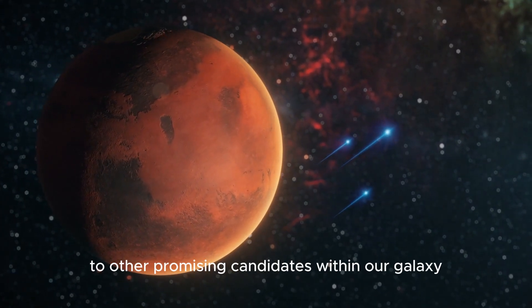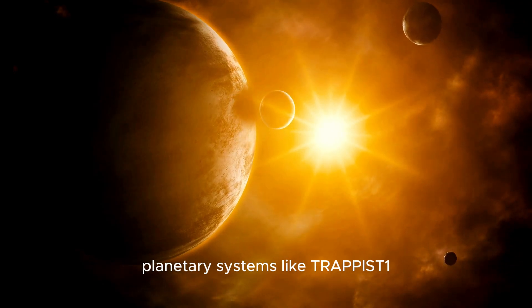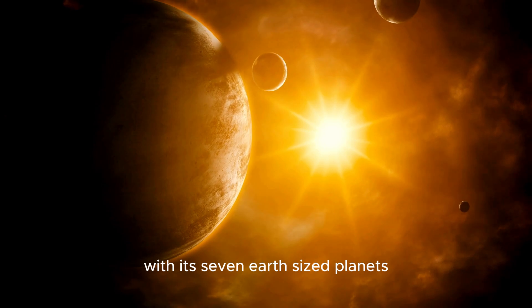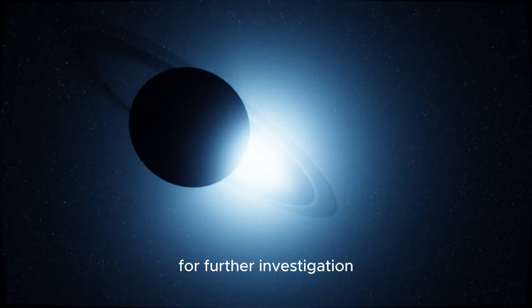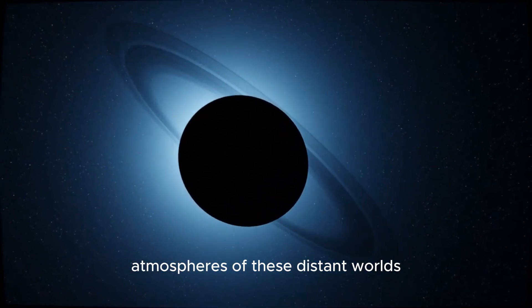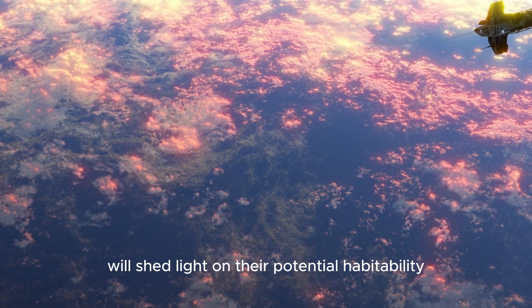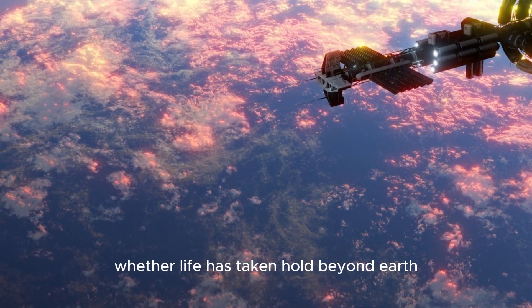The search for habitable exoplanets extends beyond Proxima Centauri b to other promising candidates within our galaxy. Planetary systems like TRAPPIST-1, with its seven Earth-sized planets, offer intriguing possibilities for further investigation. The JWST's ability to characterize the atmospheres of these distant worlds will shed light on their potential habitability and may reveal whether life has taken hold beyond Earth.